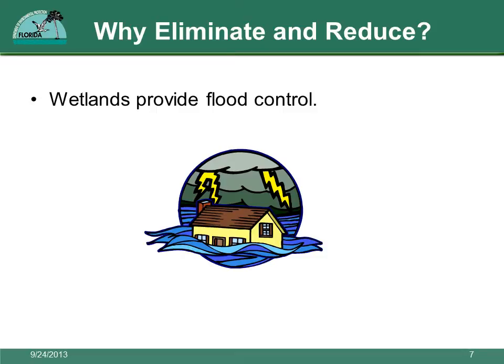Perhaps one of the most personal and tangible environmental services provided by wetlands is flood control. Wetlands are usually low-lying areas in the landscape that absorb stormwater and prevent floods. When a wetland is filled, the excess stormwater has nowhere to go and can back up onto residential and commercial properties, causing a lot of expensive damage to homes and businesses.